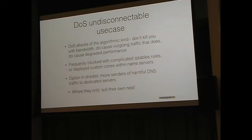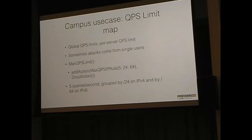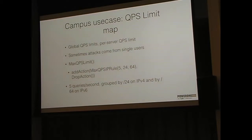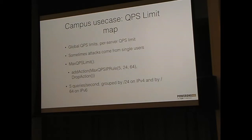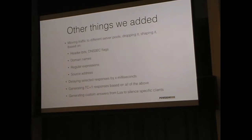The campus use case: it's an open Wi-Fi where everyone can get on, and these people put a QPS map in front — each individual IP address gets on average five queries per second with brief bursts allowed. Furthermore, they give many people a TC answer, which means 'ask the question again over TCP/IP.' All good clients will switch to TCP/IP when told, but attackers rarely write that piece of code, so they were able to shake out a lot of the stupid attacks. For IPv6, grouping is done by slash-64 because it's easy to generate a gazillion IPv6 addresses otherwise.